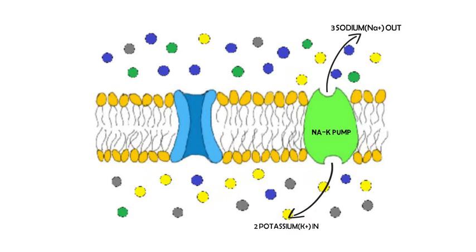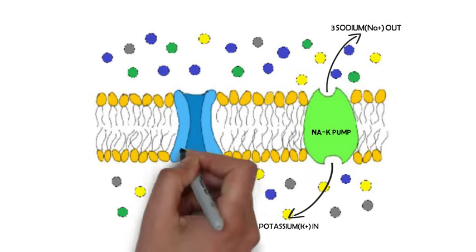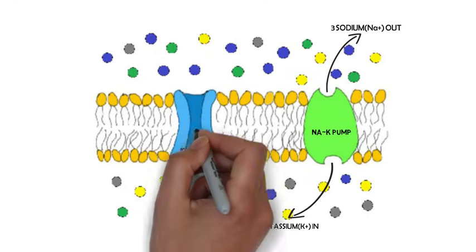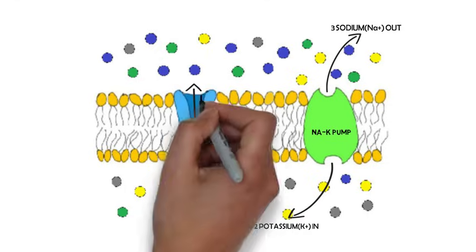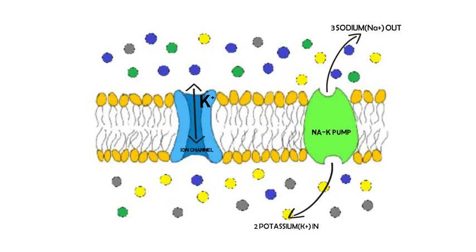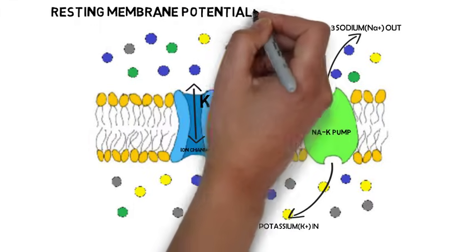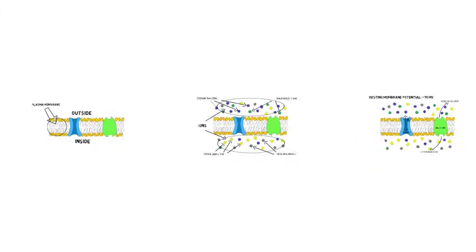Unlike other ions, potassium tends to move fairly easily across the cell membrane through ion channels, which are membrane-spanning proteins that allow ions to pass through. Potassium will pass out of the neuron until it reaches the point where it is at an equilibrium, when forces like diffusion aren't pushing it in one direction or the other. At this point, the membrane potential of the neuron is around negative 70 millivolts, which is known as the resting membrane potential.